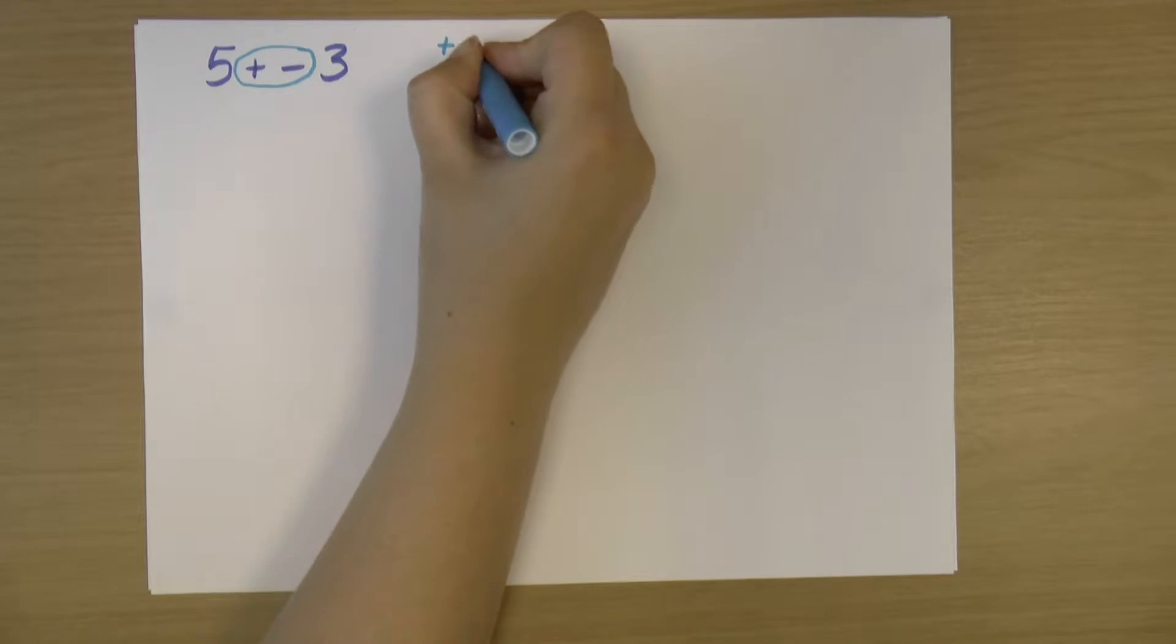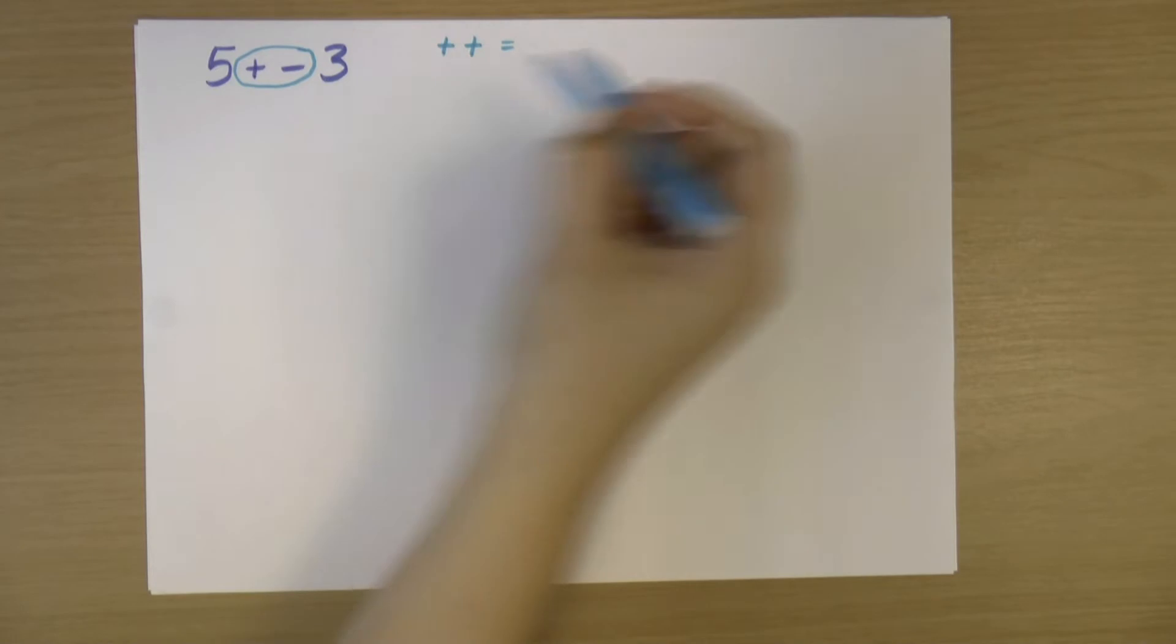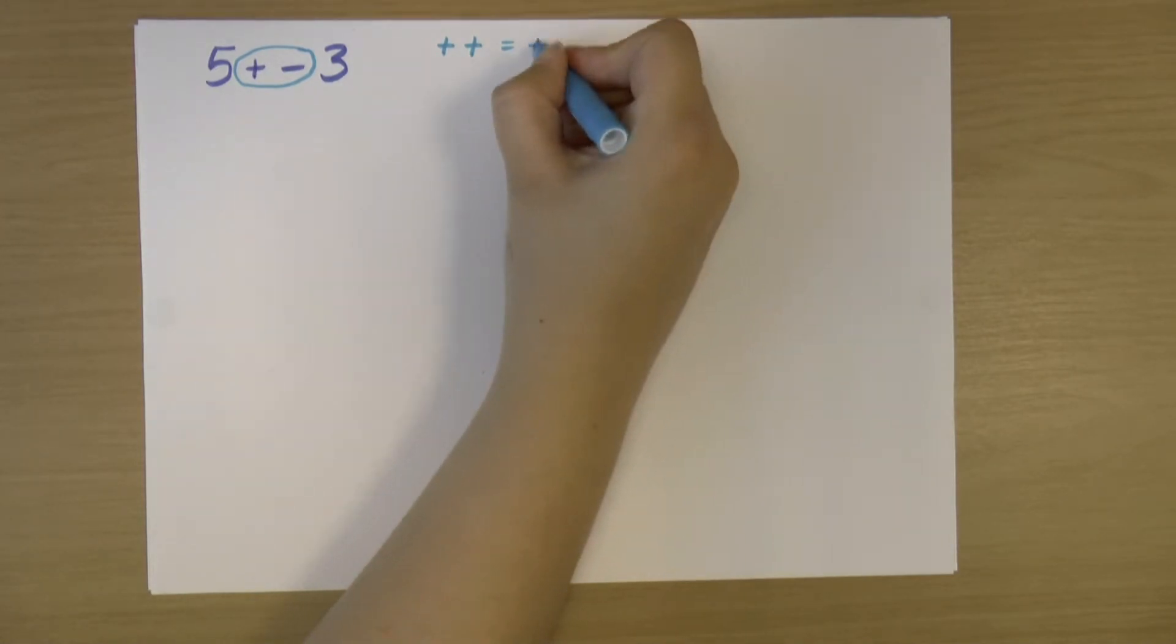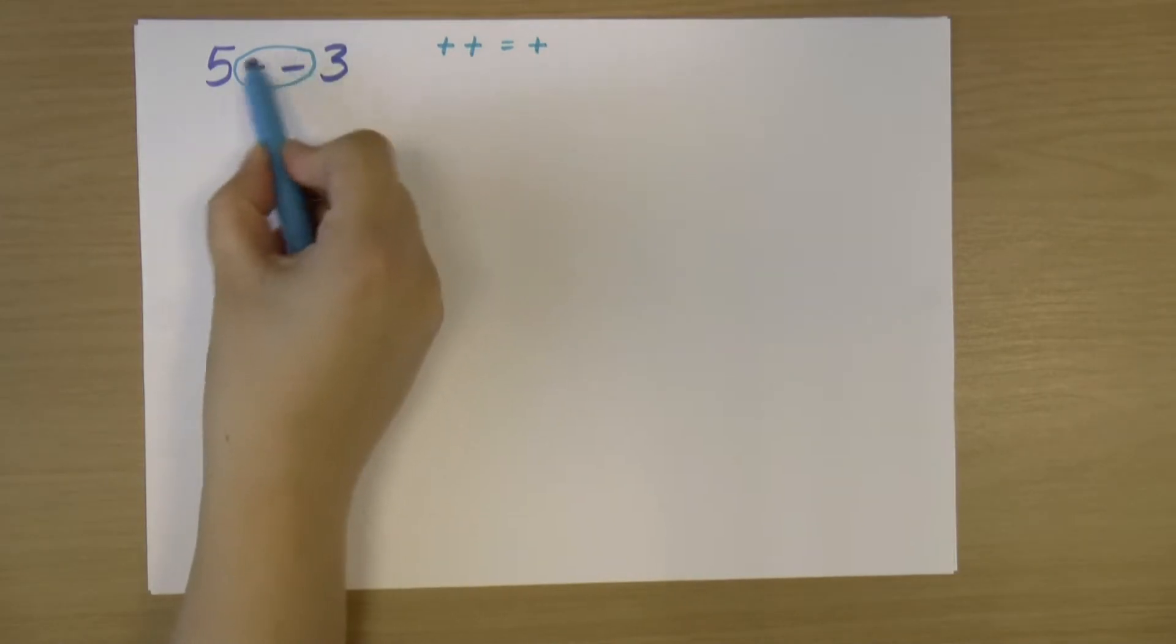Two symbols that are both pluses, then I can basically cross that out and replace it with a plus. So two pluses give a plus in that middle part.